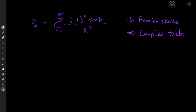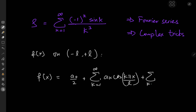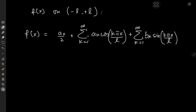We'll start with the Fourier series method. The Fourier series for a function f of x on the interval negative l to positive l can be expanded as f of x equal to a₀ over 2, plus the sum over positive integers k of a_k times cosine of kπx over l, plus another sum of b_k times sine of kπx over l. For our problem, we'll take f of x equal to x cubed and l equal to pi.